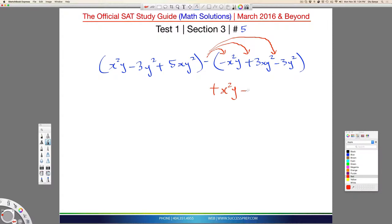So when it gets to the second one, it's going to be minus 3xy squared, and when it affects that last one, it's plus 3y squared.